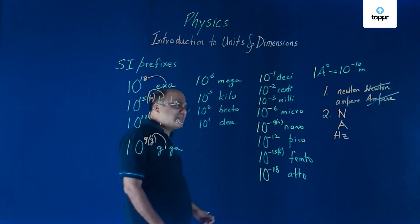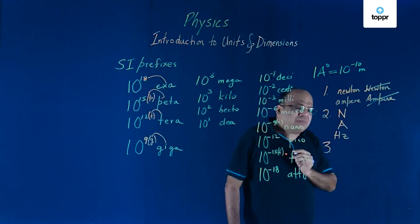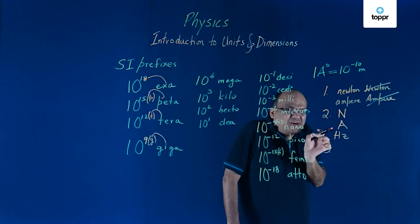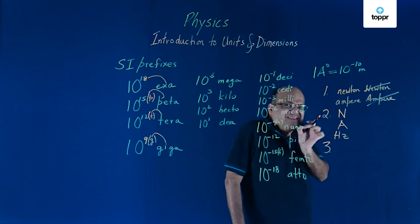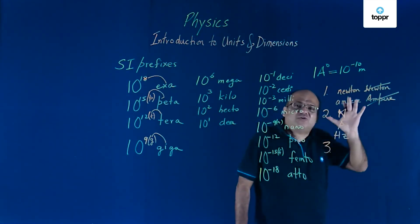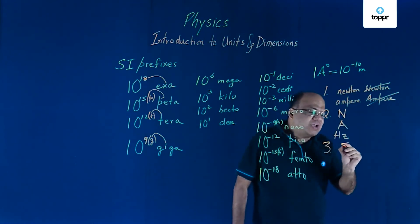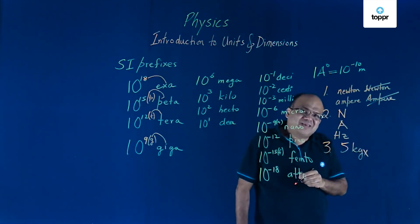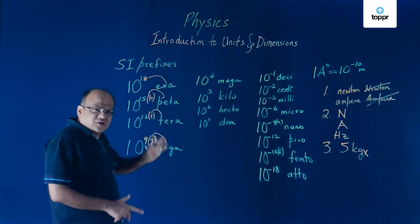Third rule. Symbols are not followed by full stop. In English, we learn whenever writing short form, initials, write a dot after that. But here for symbols, we don't put a dot. We don't write 5 kg and put a dot here to denote that this is short form. So symbols are not followed by full stop.